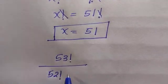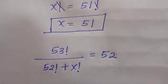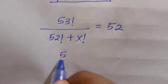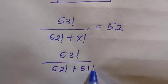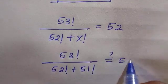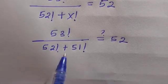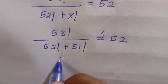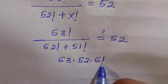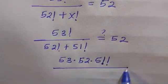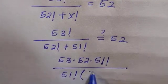52 factorial plus 51 factorial equals 52. From the above, 53 factorial, and from the below, I can factor out 51 factorial. Break this into 53 times 52 times 51 factorial, divided by 51 factorial times the quantity 52 plus 1, equals 52.